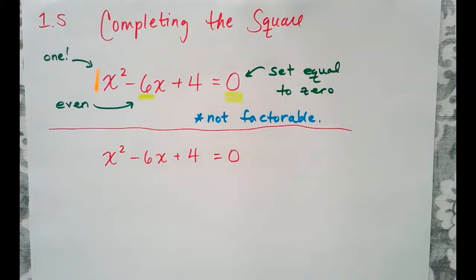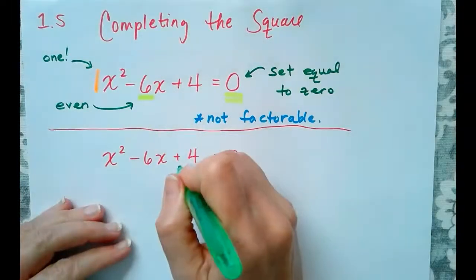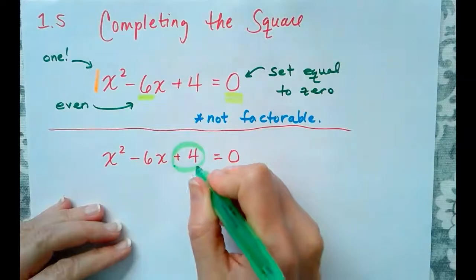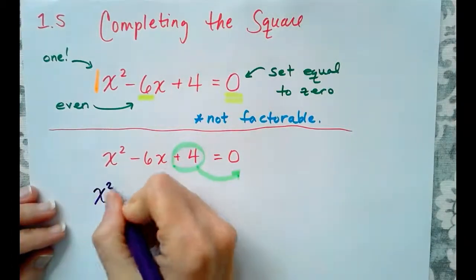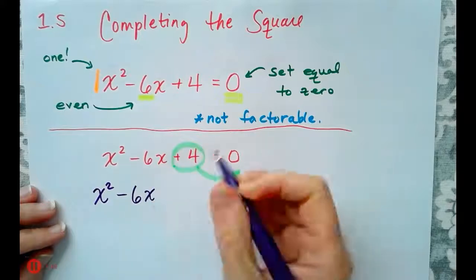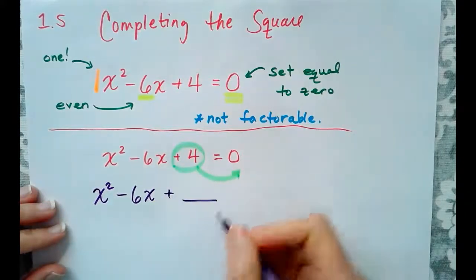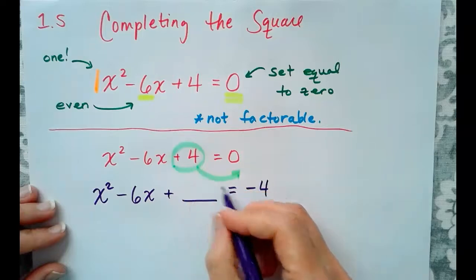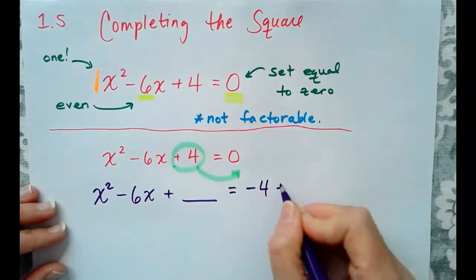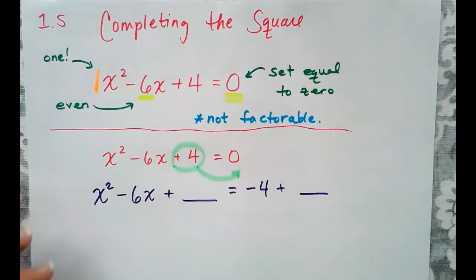So let's get started here. x² - 6x + 4. So in order to complete the square, the first thing we need to do is take the constant term and move it from the left to the right. So this will be x² - 6x plus a blank equals -4, because the 4 that was positive on the left, on the right will be negative, and plus that same blank.